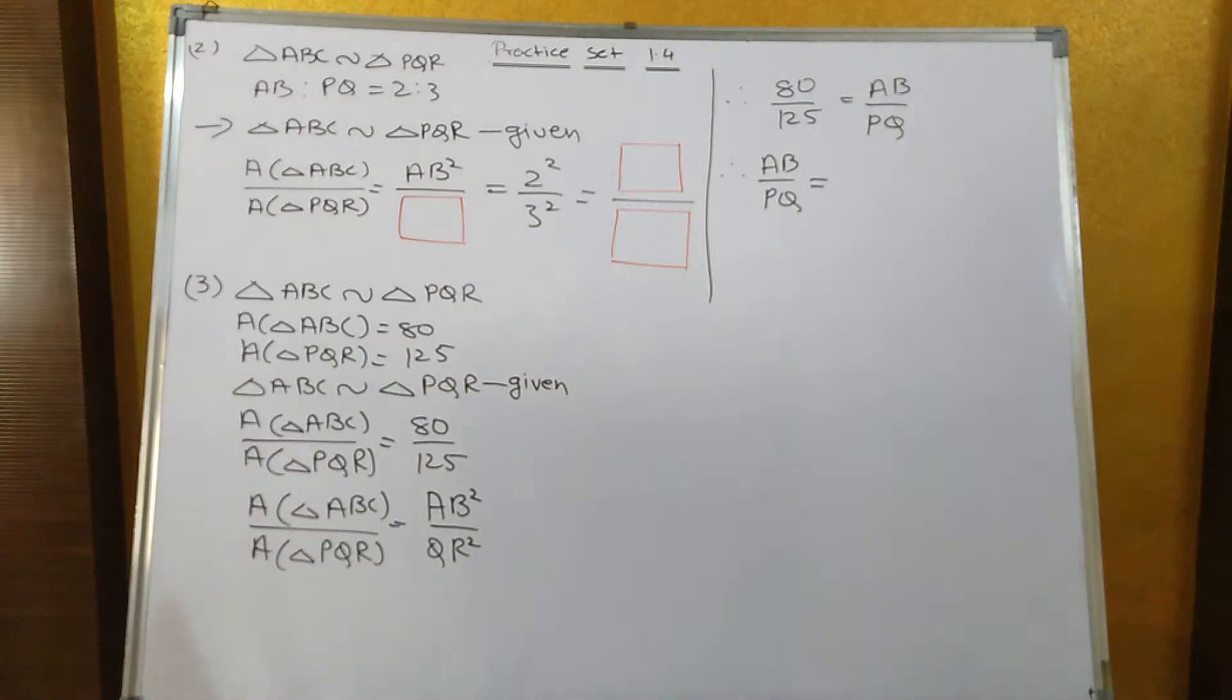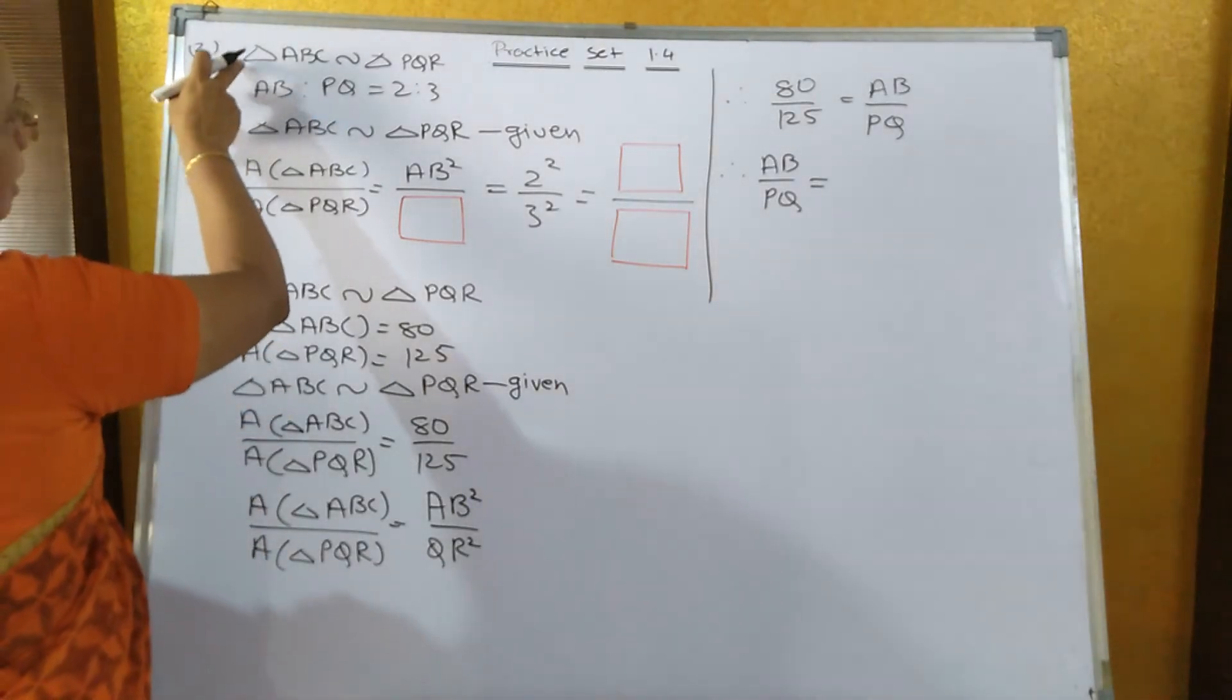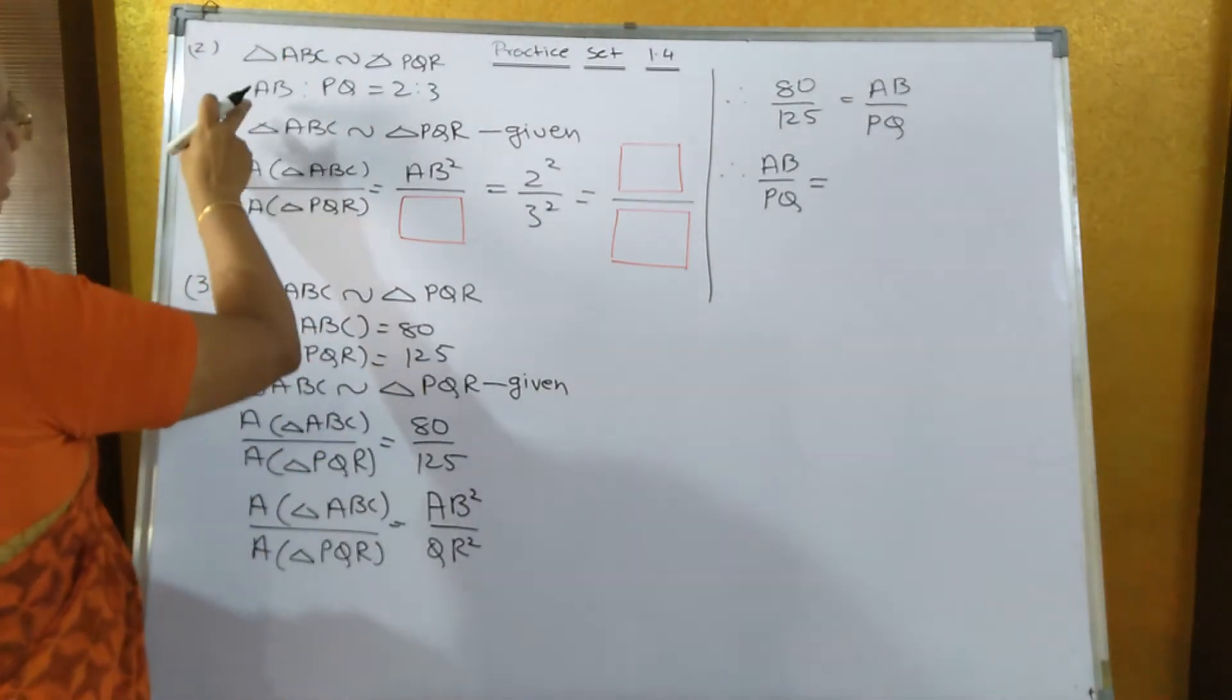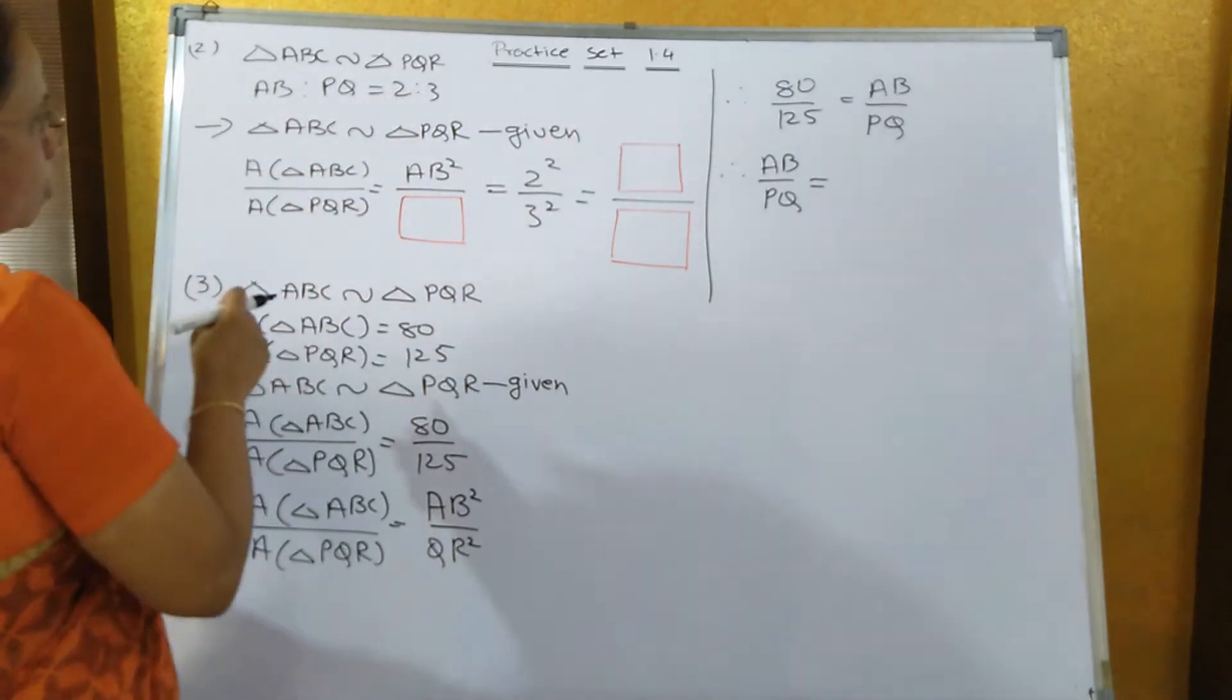Now sum number 2, they have given area of triangle ABC is similar to triangle PQR and AB is to PQ is equal to 2 is to 3.